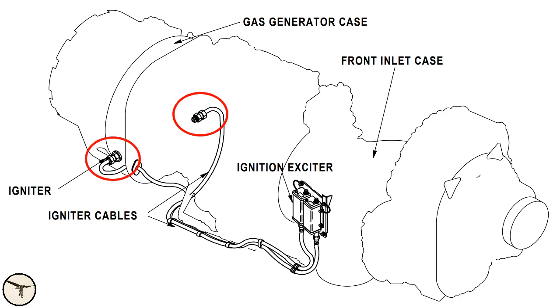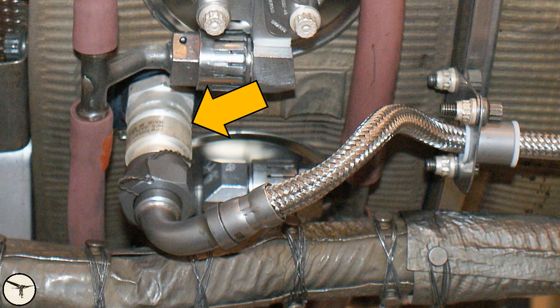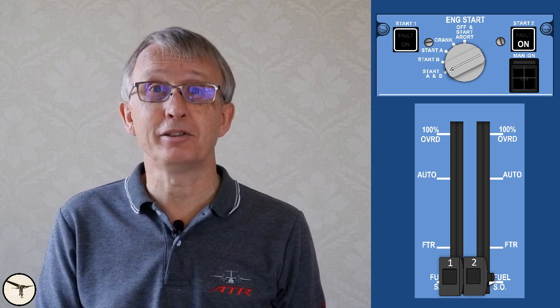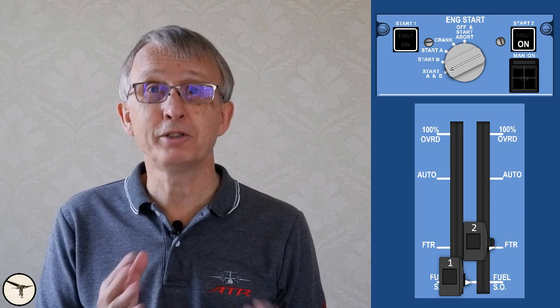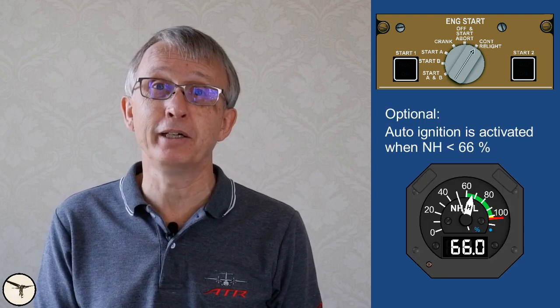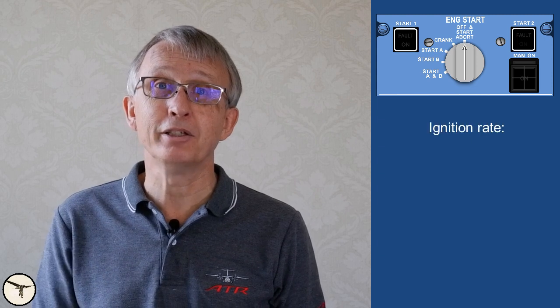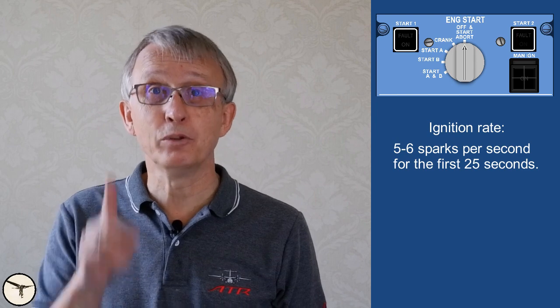The spark igniters are located at the 5 o'clock and 7 o'clock positions on the combustion chamber. When starting, the pilot can select igniter A, B, or both with the engine start rotary selector. During engine start the igniters are activated when the condition lever is moved from fuel shutoff to feather, and deactivated when NH reaches 45%. On engines without PEC, the start rotary selector has a continuous relight position for manual or continuous ignition, used for takeoff, approach, and when procedures call for it. The ignition rate is 5 to 6 sparks per second for the first 25 seconds, then 1 spark per second.